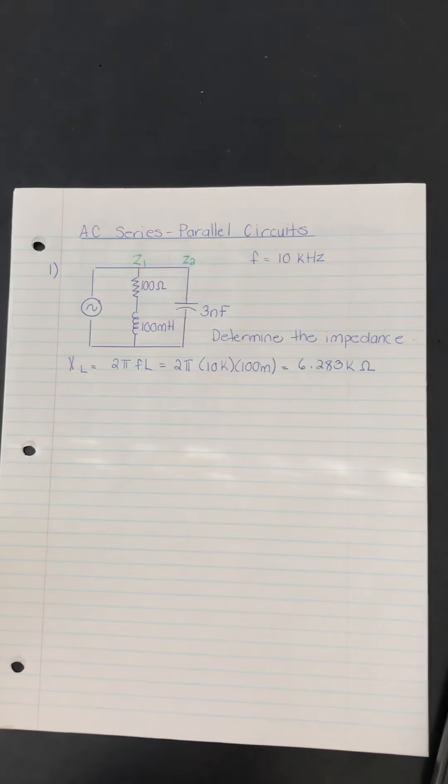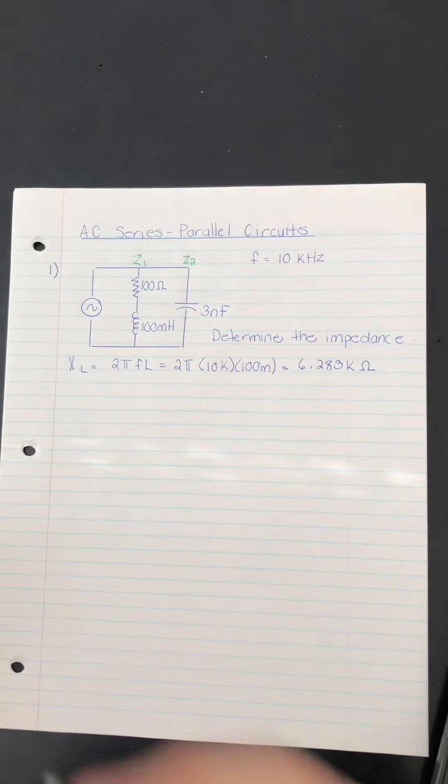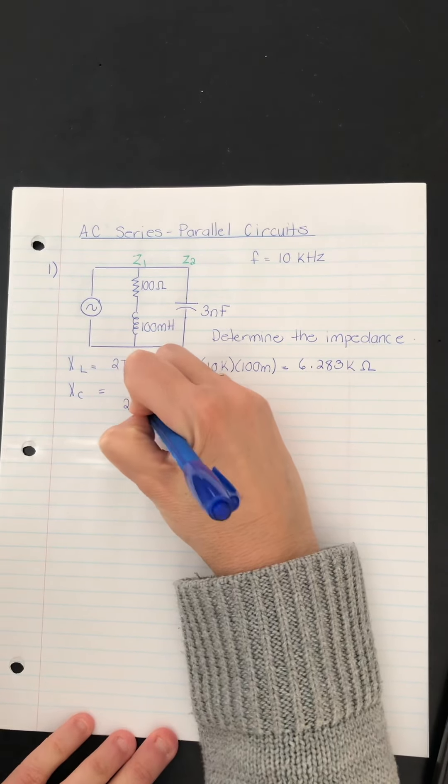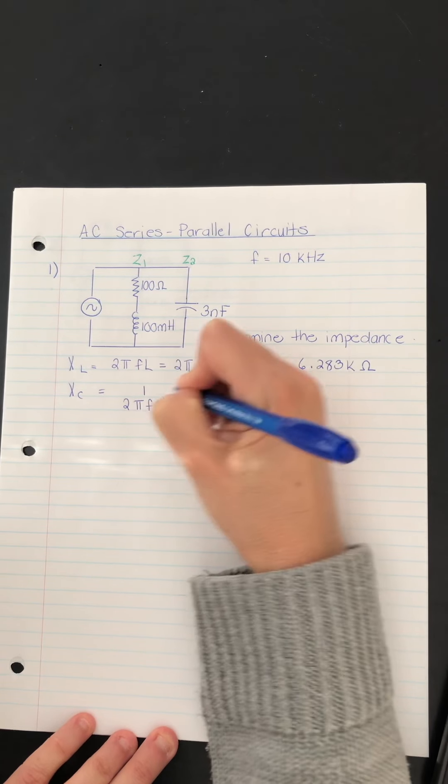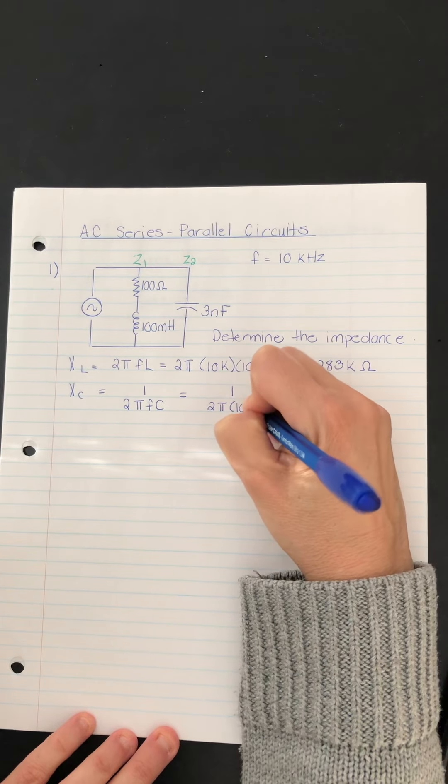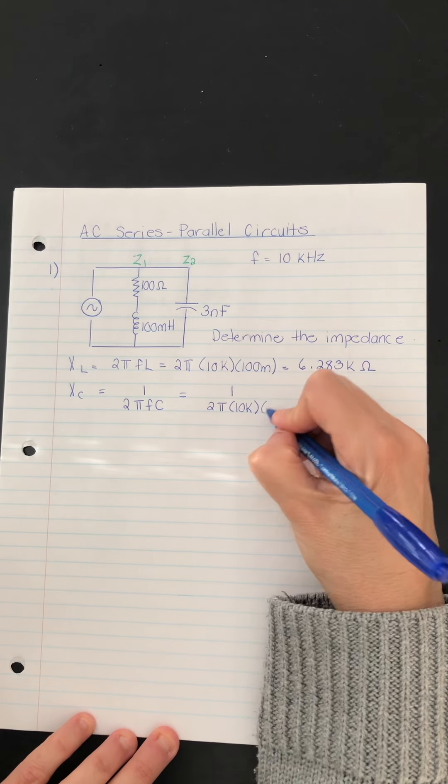I'm going to do a similar calculation now for XC. Except you'll remember the formula for that is 1 over 2 pi FC. So 1 over 2 pi times 10k times 3 nano.